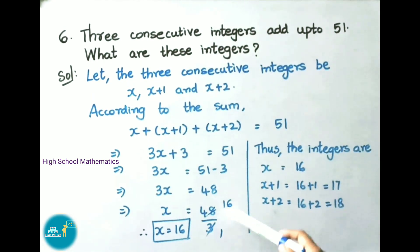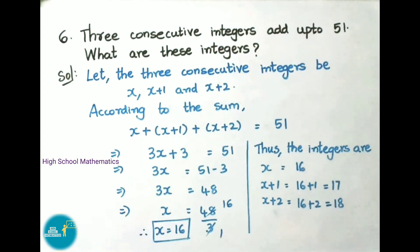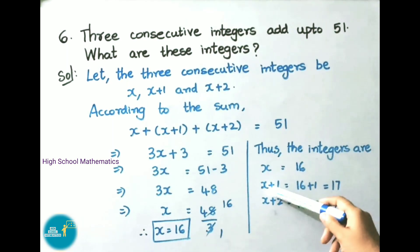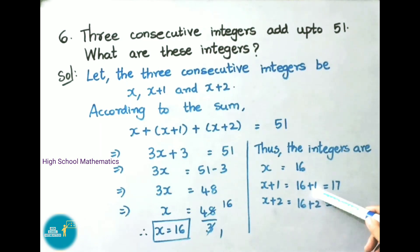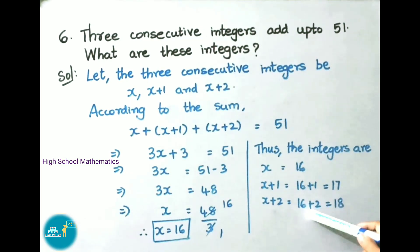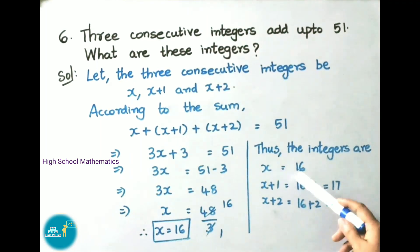3 times 16 is 48. Therefore we got x value as 16. Thus the integers are: x is 16, x plus 1 is 16 plus 1 which is 17, and x plus 2 is 16 plus 2 which is 18. Therefore the three consecutive integers are 16, 17 and 18.